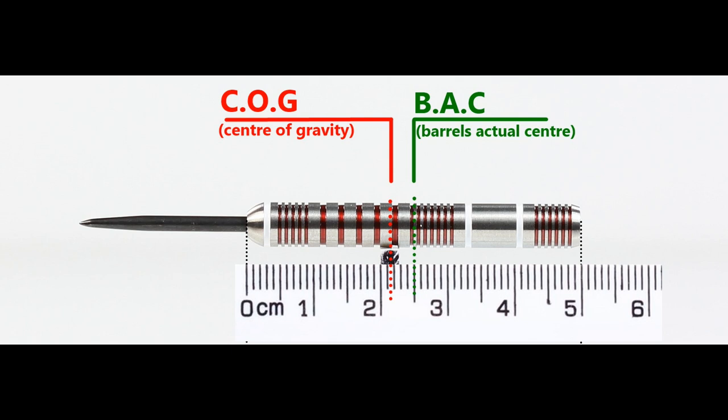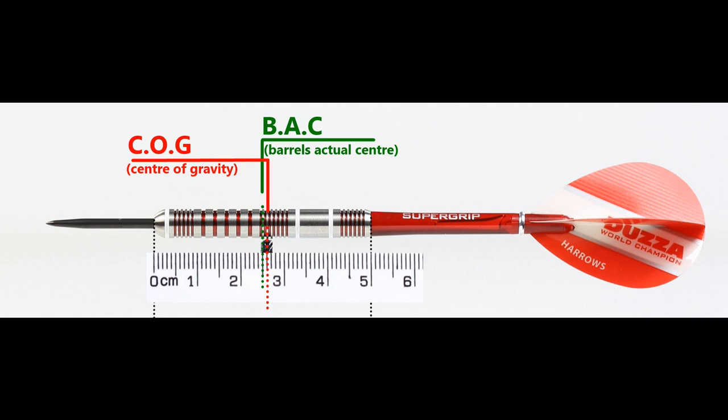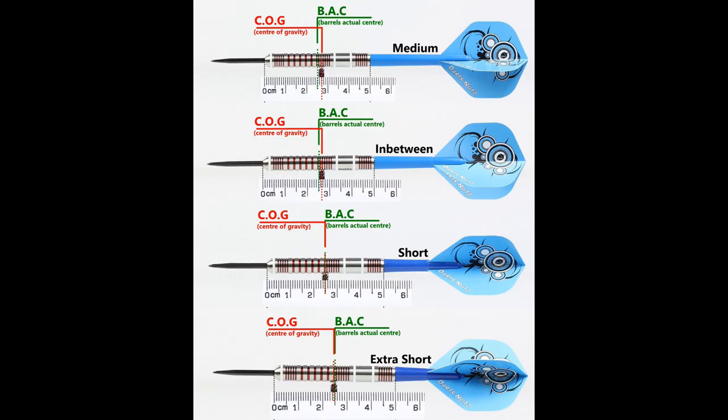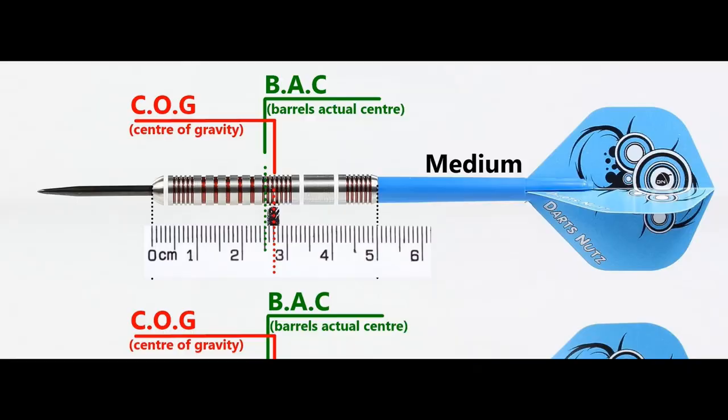With nothing attached the balance is towards the front of the barrel. With the supplied setup it's very slightly behind the center point, and this is the balance with medium in between short extra short stems and standard flights.